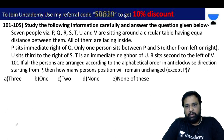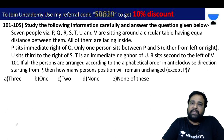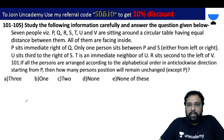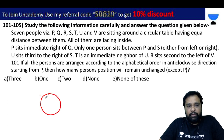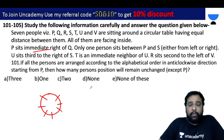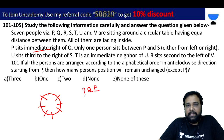We have a problem with 7 people — P, Q, R, S, T, U, V — sitting around a circular table with equal distances between them. All are facing inside. P is the immediate right of Q, and A is the immediate right of P. There is 1 person between P and S, either left or right.